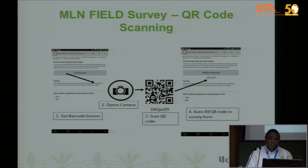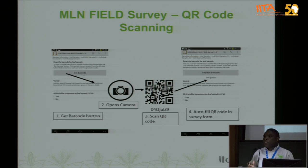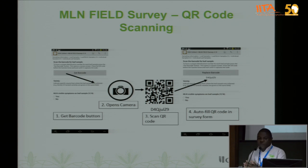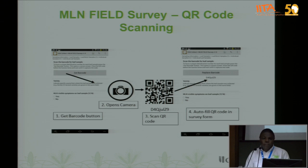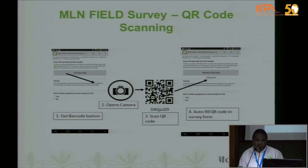This slide shows what I mentioned about the QR code — how we give a sample an identity. We generate these particular codes using different software, and they are used to identify each sample. This is very useful because you will not miss out on any sample you collect in the field.